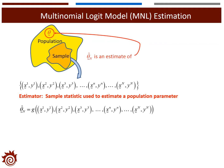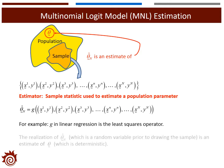Theta-hat is just one estimate of the true parameters in the population. For example, if we are considering linear regression, then g would be the function for the least squares operator. The realization of the estimated parameter theta-hat is a random variable before we actually get the sample, and it is applied to estimate the true values. We should note that the true values are deterministic for the population.